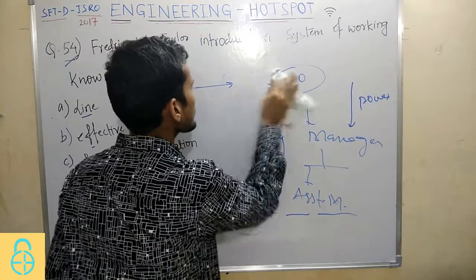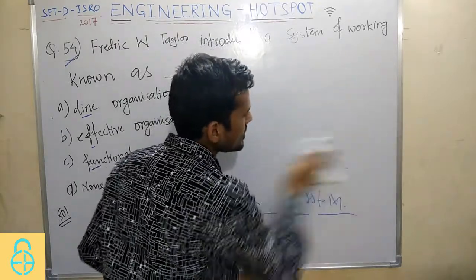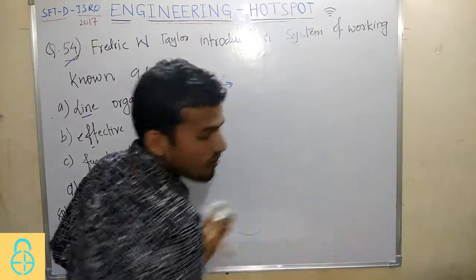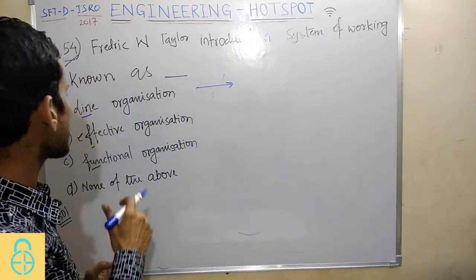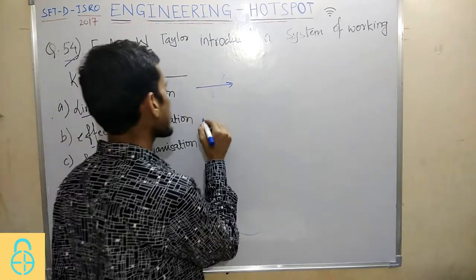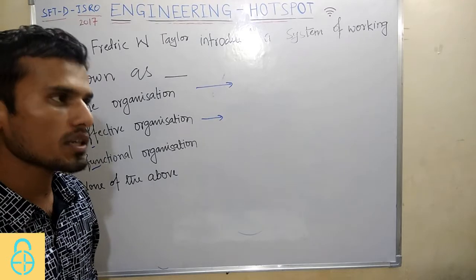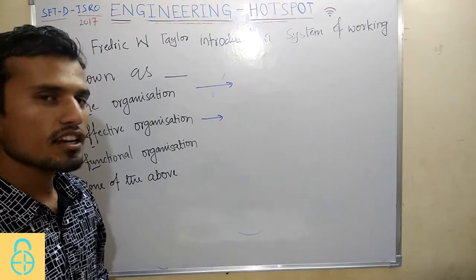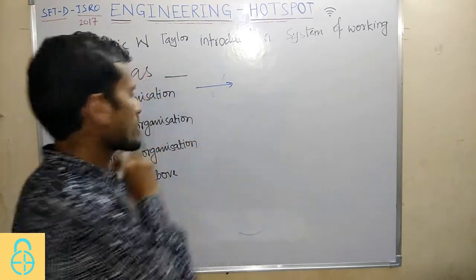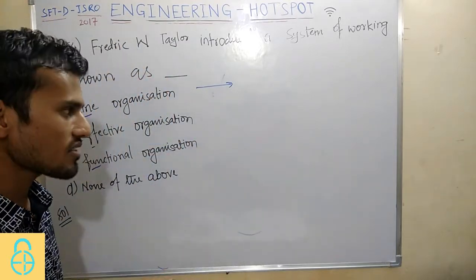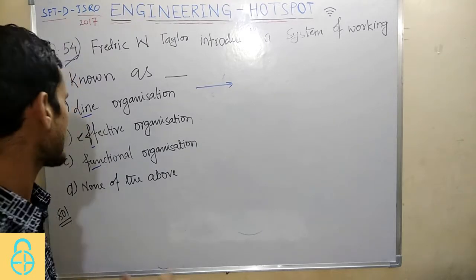Now, the second option is Effective Organization. Effective Organization is not actually a type of organization — it is just a terminology. Effective organization means it should reduce non-profit activities and take a matching amount of work from the workers. It is not a classification of organization, just a term.